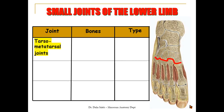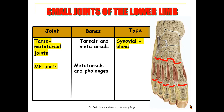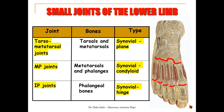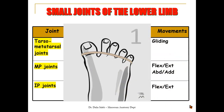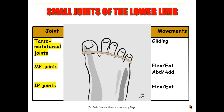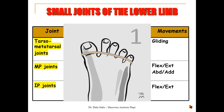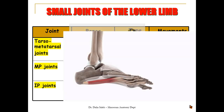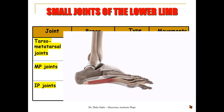We also have the tarsometatarsal joints between the tarsal bones and the bases of the metatarsals — synovial plane joints. The metatarsophalangeal joints between the heads of the metatarsals and the phalanges are synovial condyloid joints — biaxial joints allowing movement in two axes. The interphalangeal joints between the phalanges are synovial hinge joints. The metatarsophalangeal joints perform abduction by the dorsal interossei and adduction by the plantar interossei — abduction and adduction occurring around the axis of the second toe — as well as flexion and extension by the short and long flexors and extensors.